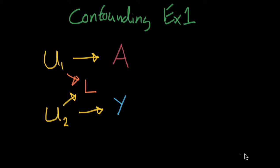So I think the easy way to write this out, at least for me, is I write this out all in a line. So I say A is influenced by some U1. U1 is going to influence some sort of L. L is also influenced by U2. And then finally, U2 influences Y.